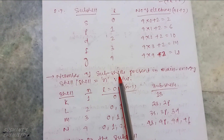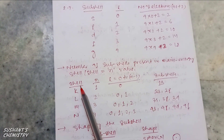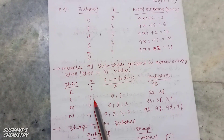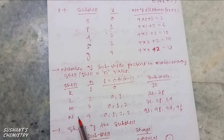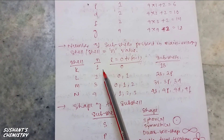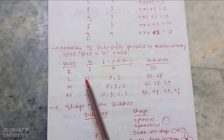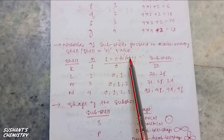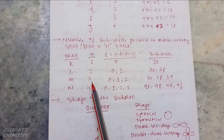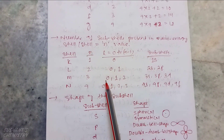The number of sub-cells present in a main energy cell equals the value of n. The main energy cells are K, L, M, and N. For K cell n=1, L cell n=2, M cell n=3, N cell n=4. The value of l equals 0 to n minus 1. For K cell: l = 0 only. For L cell: l = 0 to 1, that is 0 and 1. For M cell: l = 0 to 2.